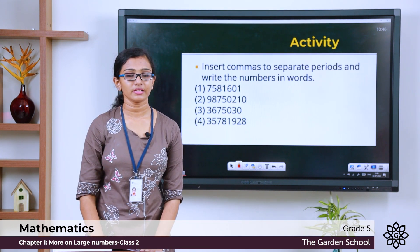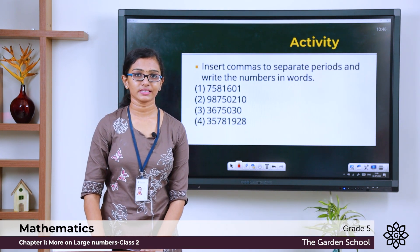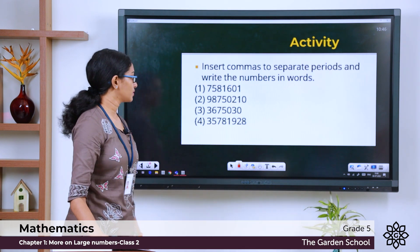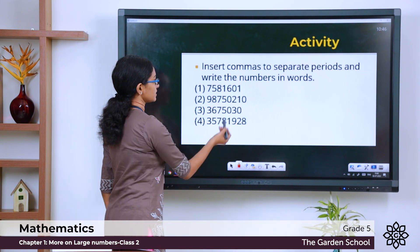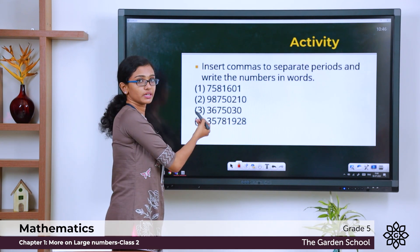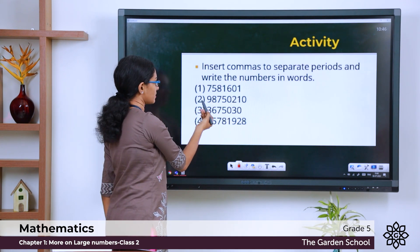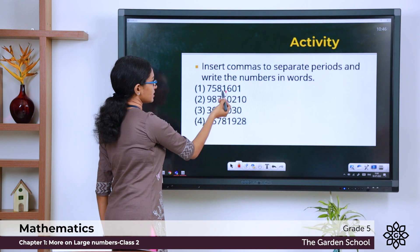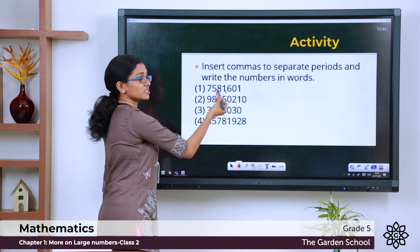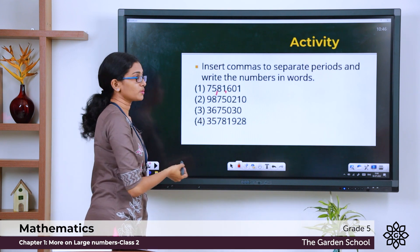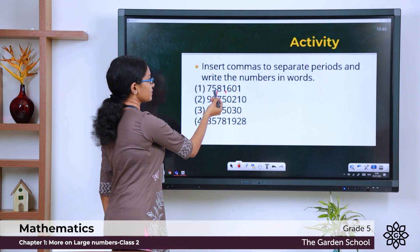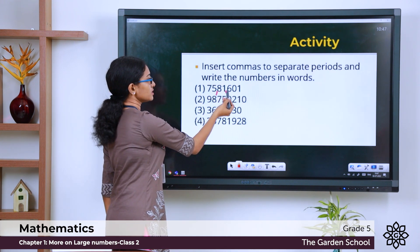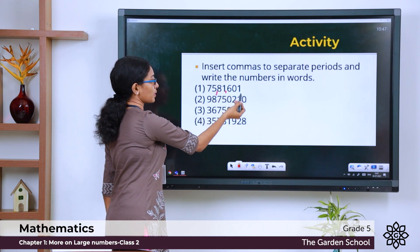Hope you have finished that one. Now let us see the answers. For the first question, let us insert commas in between. 1s, 10s, 100s — comma here. 1000s, 10,000s — comma here. So this number in words will be 75,08,16,01.